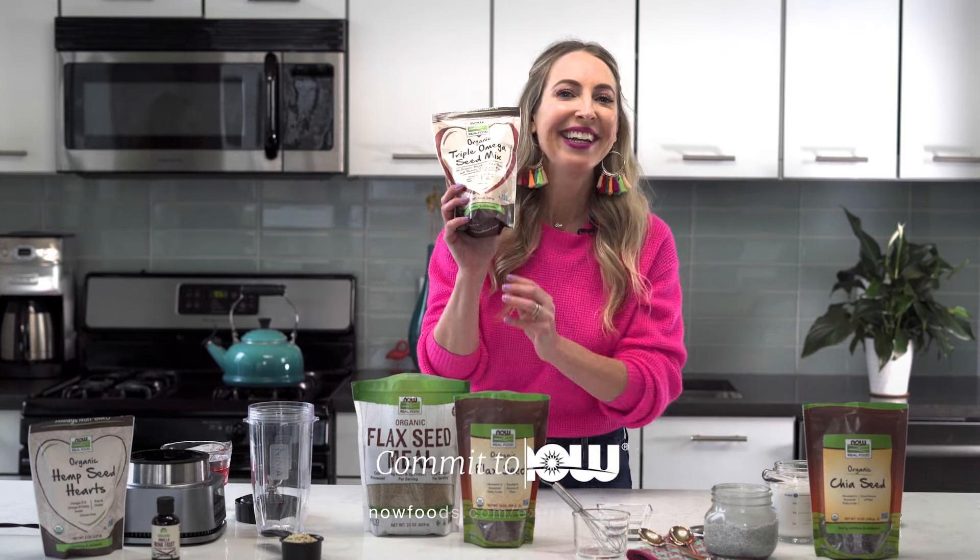To a blender, add a fourth of a cup of hemp seeds and two cups of water and blend about one minute until smooth. You can add other ingredients like sea salt, dates for sweetness, vanilla extract, or vanilla monk fruit.